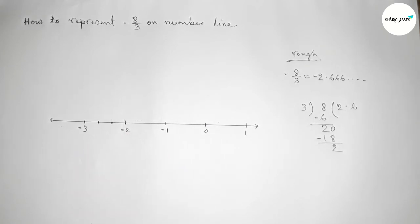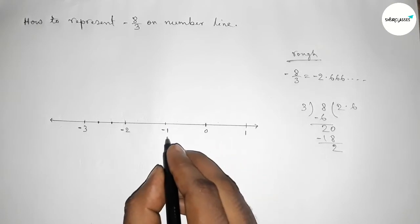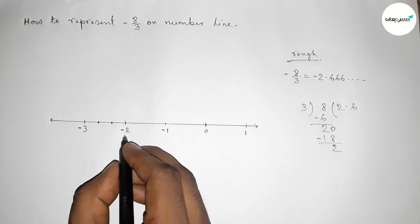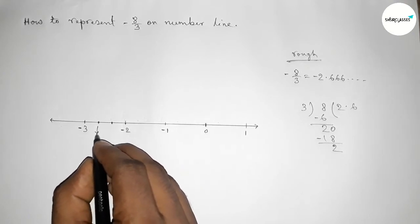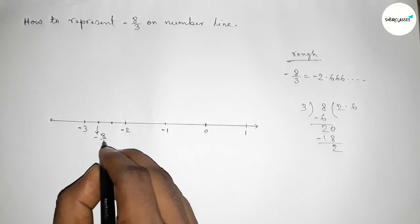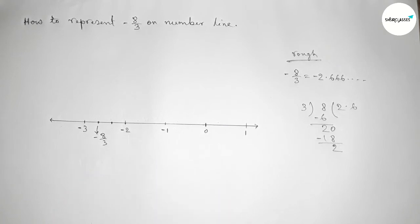Now counting from starting here zero, this one minus three by three, this one minus six by three, this one minus seven by three, and this one minus eight by three on number line.